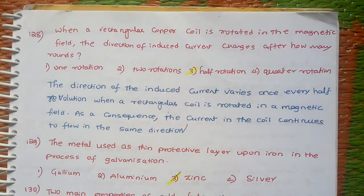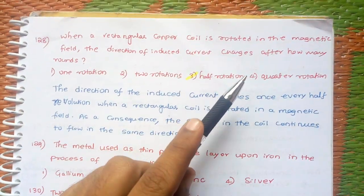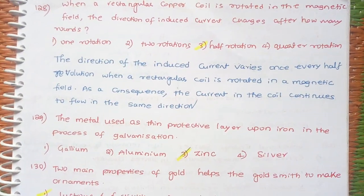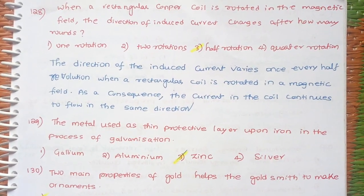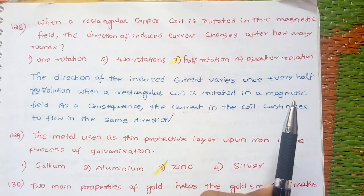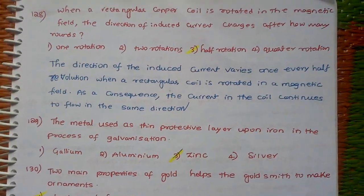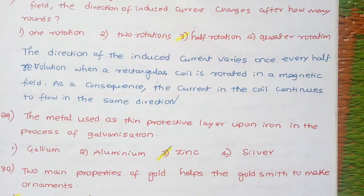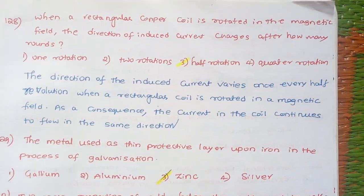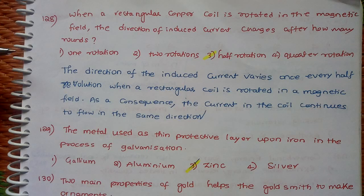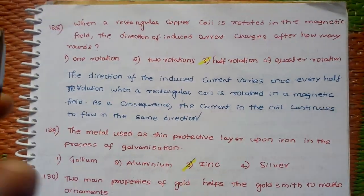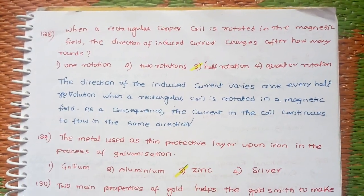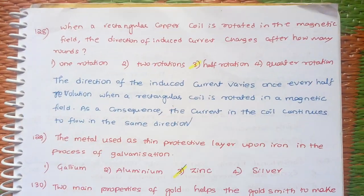Next, when a rectangular coil is rotated in a magnetic field, the direction of induced current changes how many times. As you know, it's based on Fleming's rule. The direction of induced current varies once every half revolution. When a rectangular coil is rotated in a magnetic field, as a consequence the current in the coil continues to flow in the same direction. It's based on Fleming's left hand rule. After every half rotation, the induced current direction changes when placed in a magnetic field.